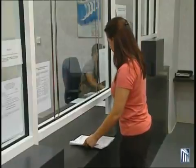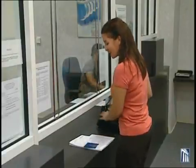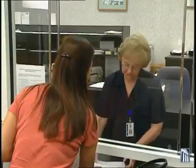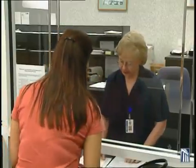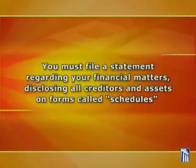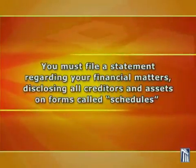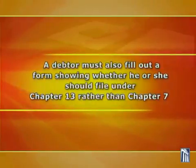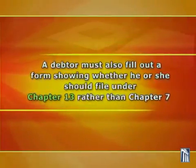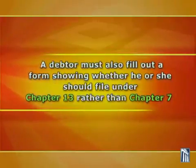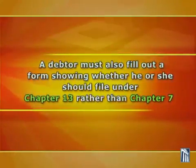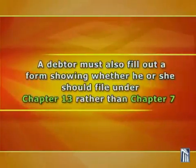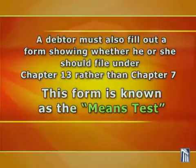To start a bankruptcy case, you file what is called a petition with the bankruptcy court in the federal judicial district and division where you live. The petition contains a request for relief under one of the chapters of the bankruptcy code. You must file a statement regarding various financial matters and disclose all creditors and assets on forms called schedules, and you must fill out a form showing whether you should file under Chapter 13 rather than Chapter 7 given the amount of money left over each month after deducting reasonable household expenses. This form is called the Means Test Form.